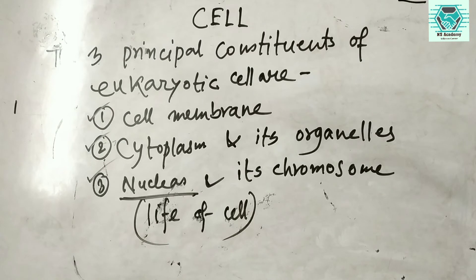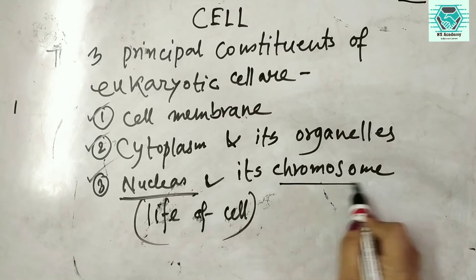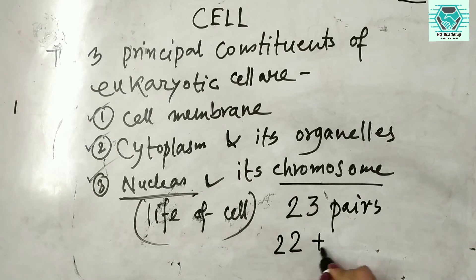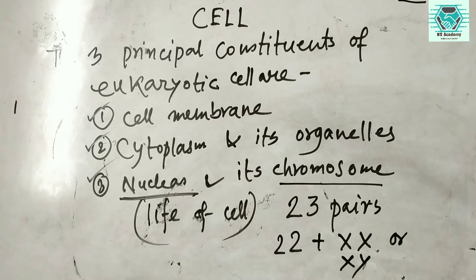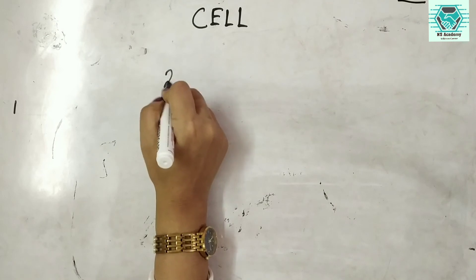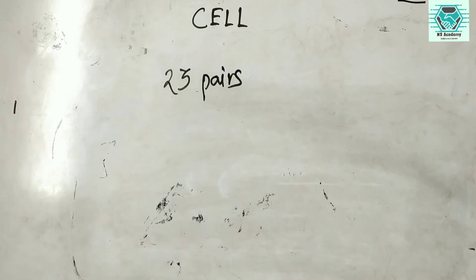We know that in our body there are 46 chromosomes, which means 23 pairs — 22 pairs plus XX or XY. These chromosomes are present in each and every single cell. Each cell has a nucleus and the nucleus contains all 23 pairs of chromosomes.